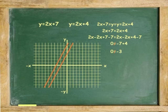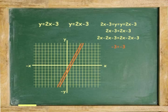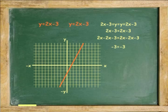If the solution had been a true statement, like negative 3 equals negative 3, then all the points of both lines are at the intersection and both lines are the same. Which is a case of identity property.